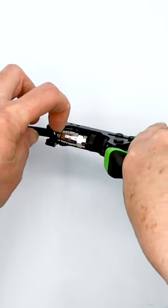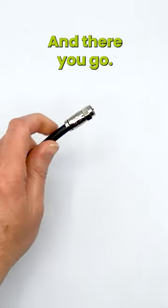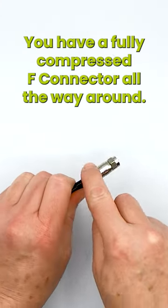That's it. Open up the gate, take it out, and there you go. You have a fully compressed F connector all the way around.